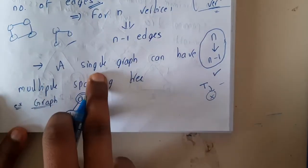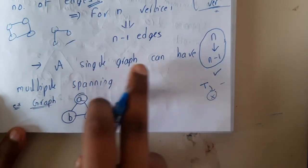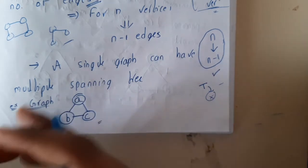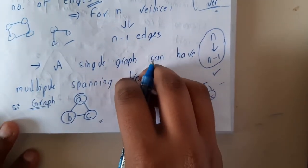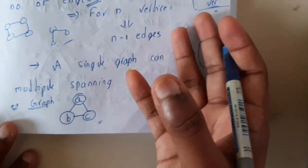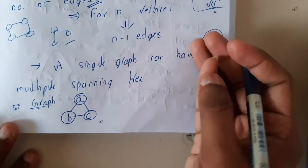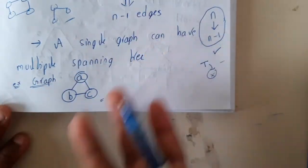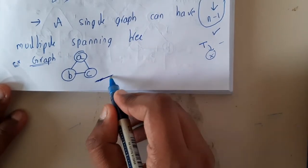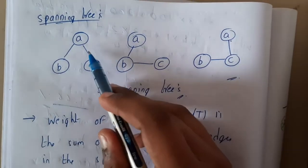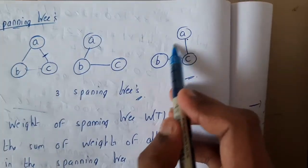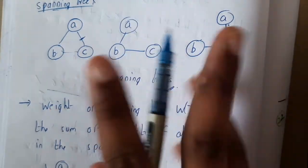A single graph can have multiple spanning trees. When you are given graphs with multiple paths, loops, and cycles, you need to find the spanning tree. You can think of it as a conversion of a graph into a tree. For example, if you break any one of the loop-forming edges, you get a spanning tree — and from a small graph I got three different spanning trees this way.